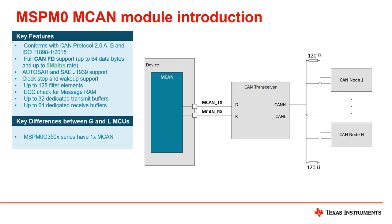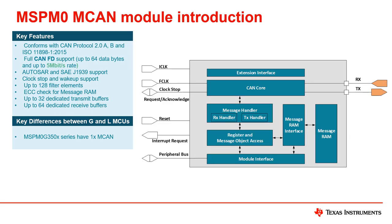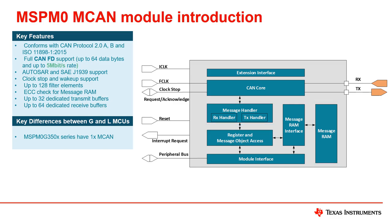The MSPM0's MCAN module supports a variety of high-level protocols such as Autosar and SAE J1939. Please check the website for support details. On the specific configuration of the MCAN module, there are a wide range of configuration options such as configuring hardware ID filtering, configuring different types of buffers, and more. The MCAN module is designed to meet the needs of many different applications.